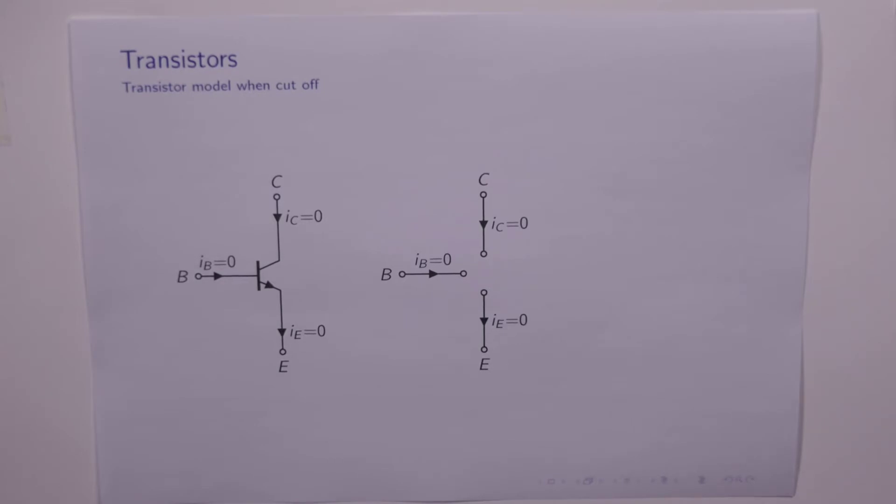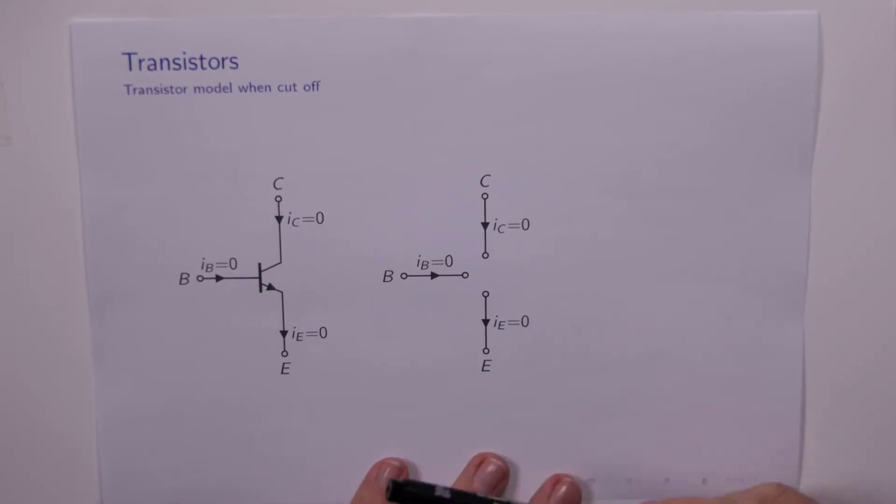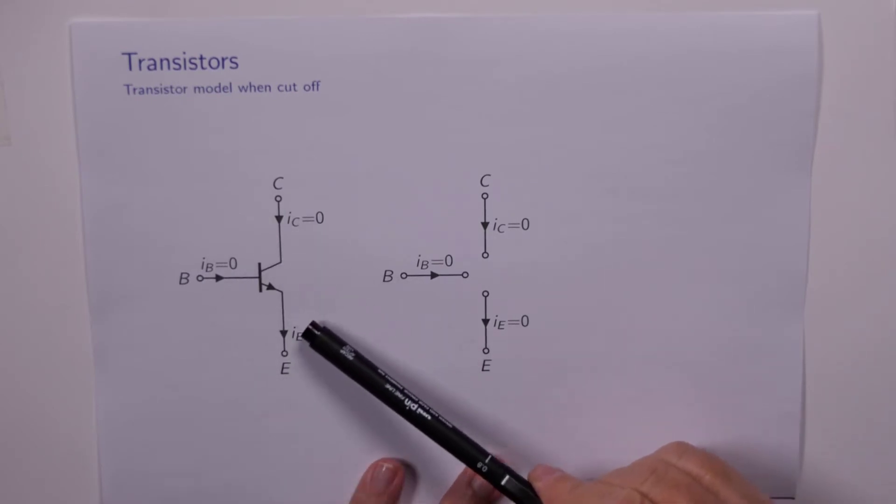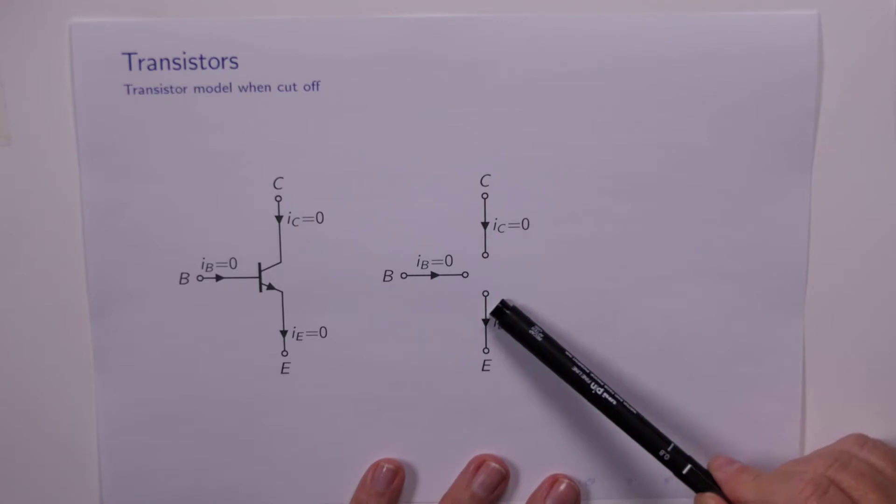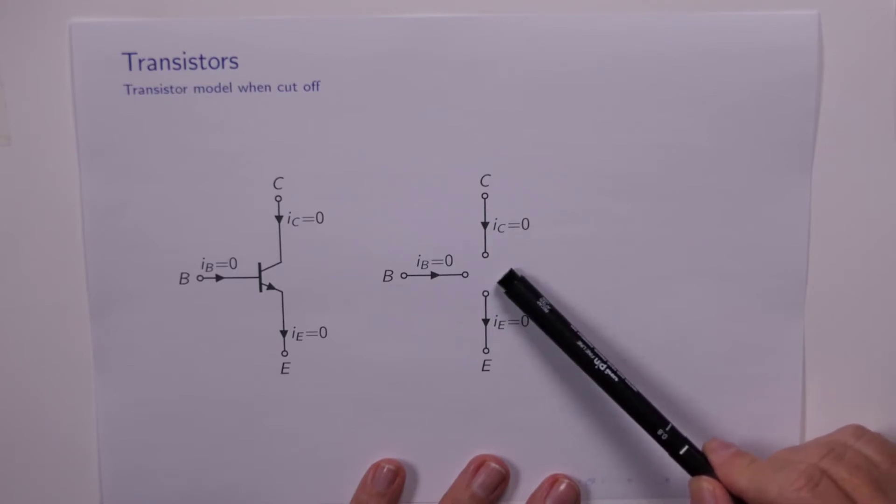There's no base current that's flowing, therefore there's no collector current that's flowing and the device is off. So that's the same as having no currents in these three terminals. The transistor is doing nothing, so it's like not having the transistor at all.